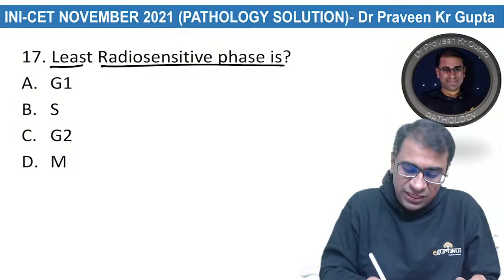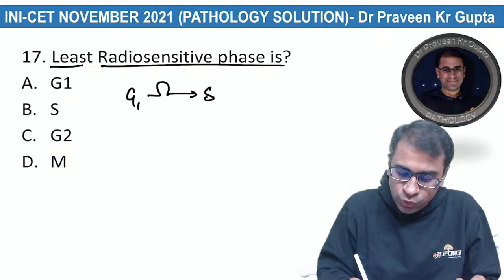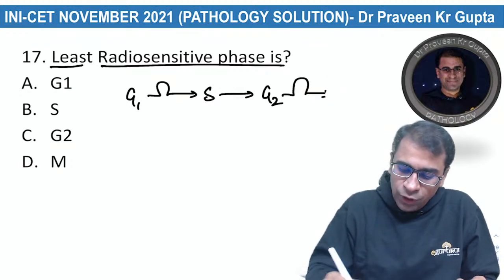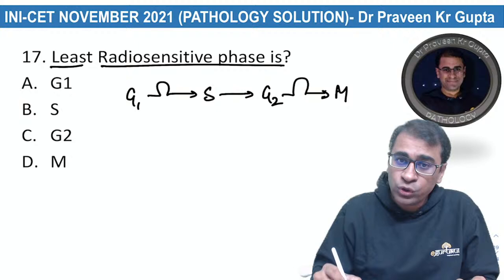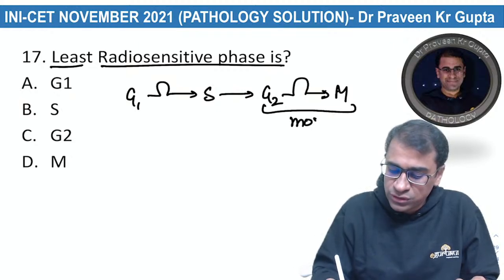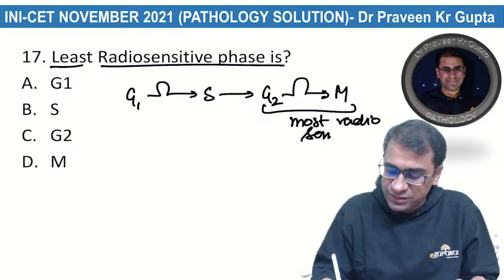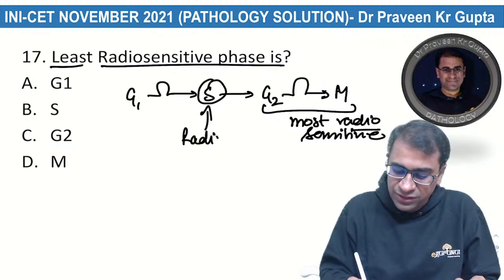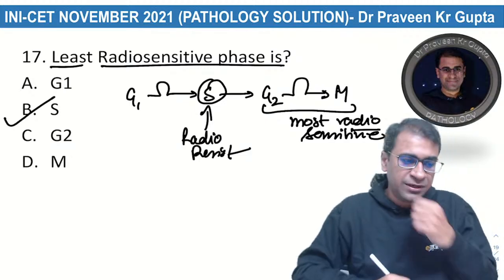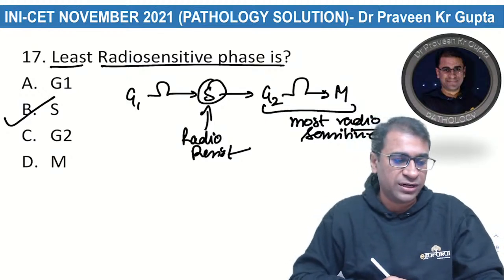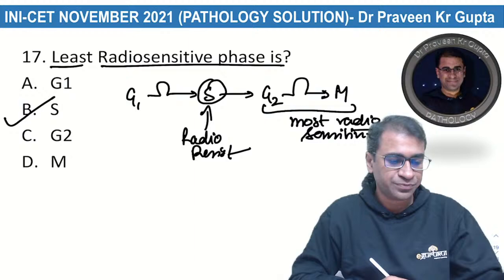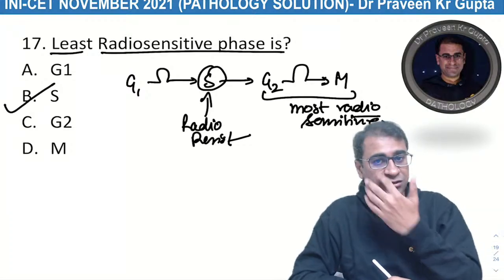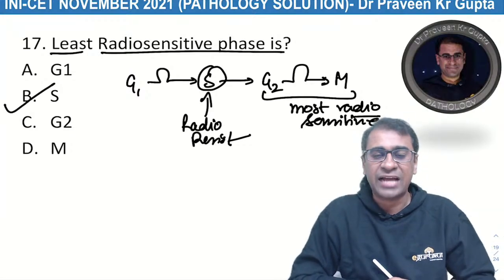Least radiosensitive phase of the cell cycle. The cell cycle goes: G1 → S → G2 → M. The most radiosensitive phase is G2M. The least radiosensitive (most radioresistant) phase is S phase. So if the question asks for the least radiosensitive phase, the answer is S phase.